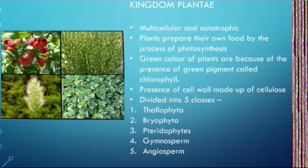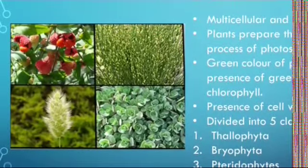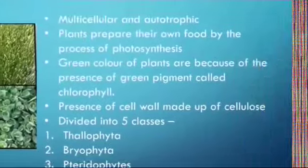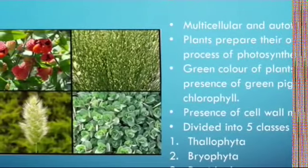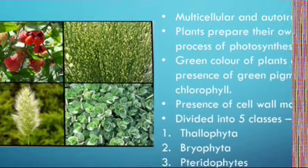Hello everyone, here is a new video of our chapter Kingdom Classification. Let us start with Kingdom Plantae. Whenever you see a plant, first of all what you notice? You notice that the plant is green in colour. Green in colour means they will perform photosynthesis and they will prepare their own food.